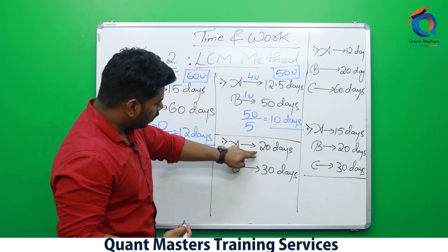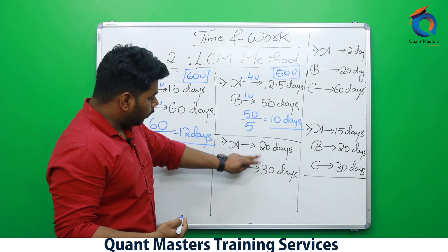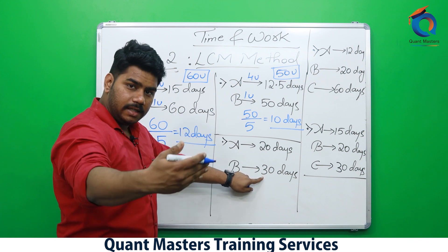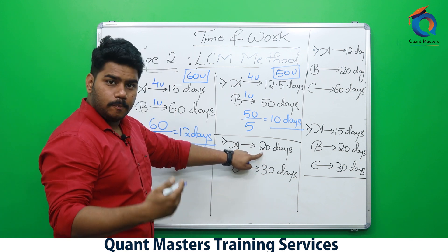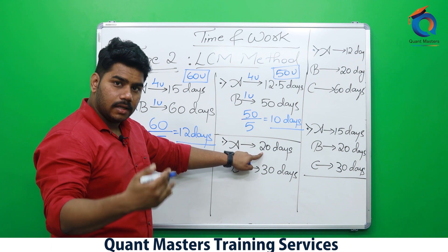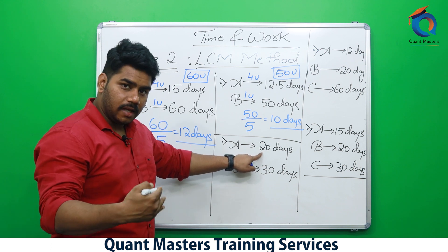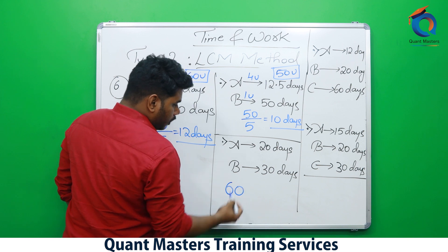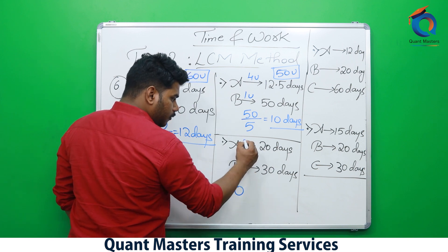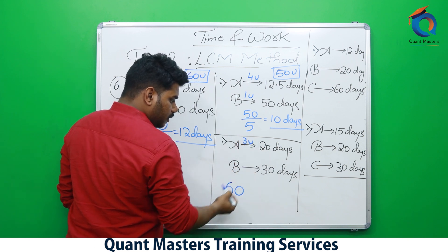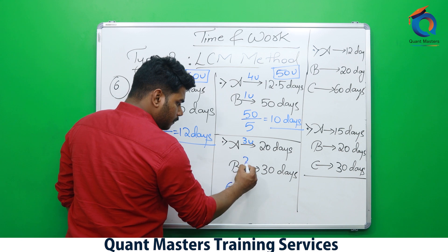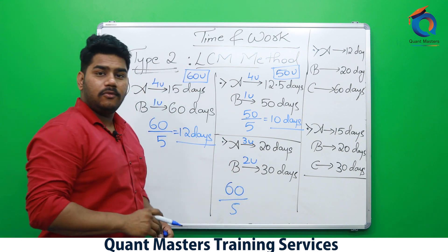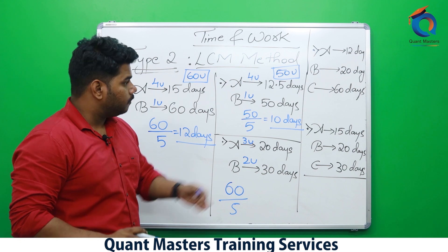Next: A takes 20 days, B takes 30 days. The larger number is 30. Keep multiplying 30 until 20 divides it — 30×2 = 60. Does 20 divide 60? Yes. So LCM is 60. A does 3 units per day, B does 2 units per day. Together 5 units per day. Answer is 60/5 = 12 days.